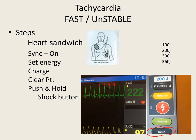Then you're going to set your energy level. They've smoothed it out: the first synchronized cardioversion is at 100, the second sync is at 200, the third sync is at 300, and the fourth sync, if needed, is at 360. Then we're going to charge the monitor, clear the patient, and then push and hold the shock button so the computer synchronizes that electrical discharge on that R-wave.